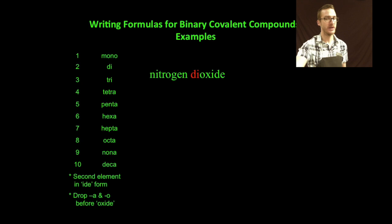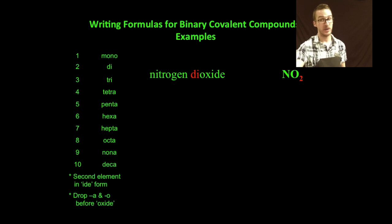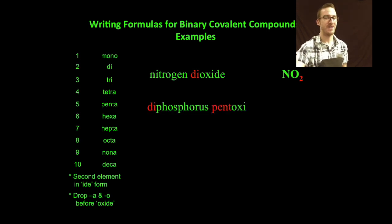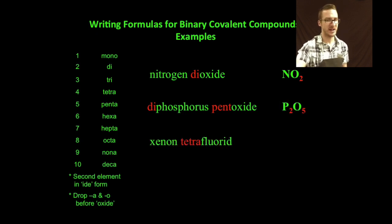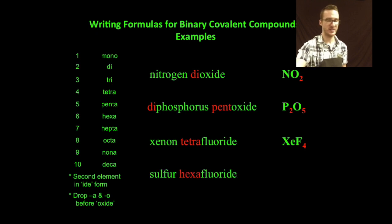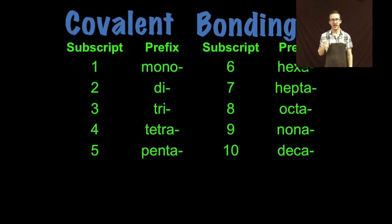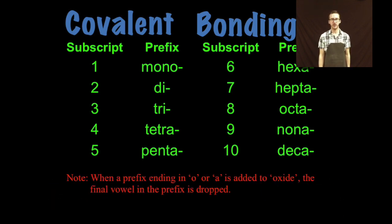Let's do some examples. 'Nitrogen dioxide': no prefix on the first element indicating one nitrogen, the prefix 'di' indicates two oxygens, so we get NO2. Important: this is not the nitrite ion — I know that because it's not charged and it doesn't say 'nitrite ion' in the name. 'Diphosphorus pentoxide': two phosphorus, five oxygen — P2O5. 'Xenon tetrafluoride': XeF4. 'Sulfur hexafluoride': SF6. Take a moment, pause the video, look at those prefixes and their corresponding subscripts.